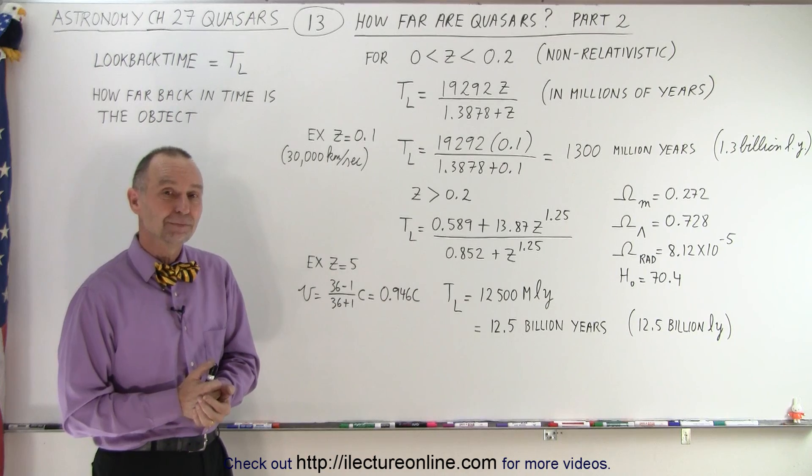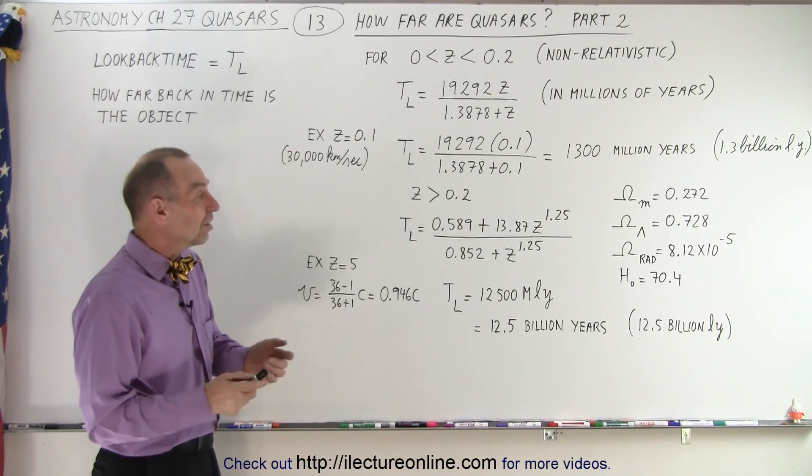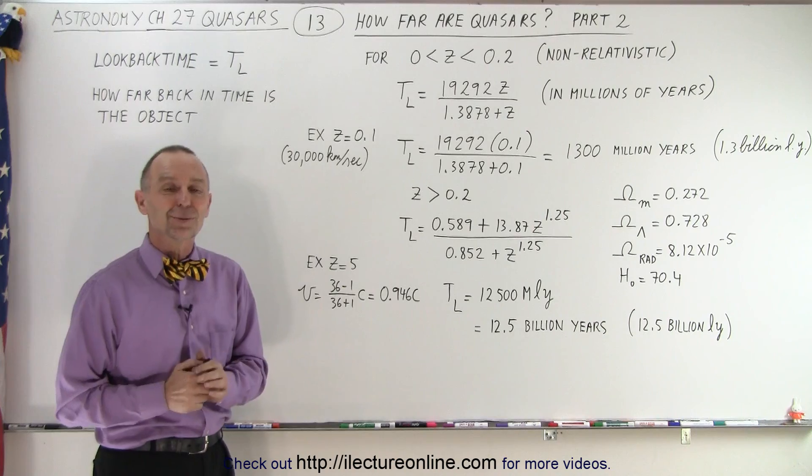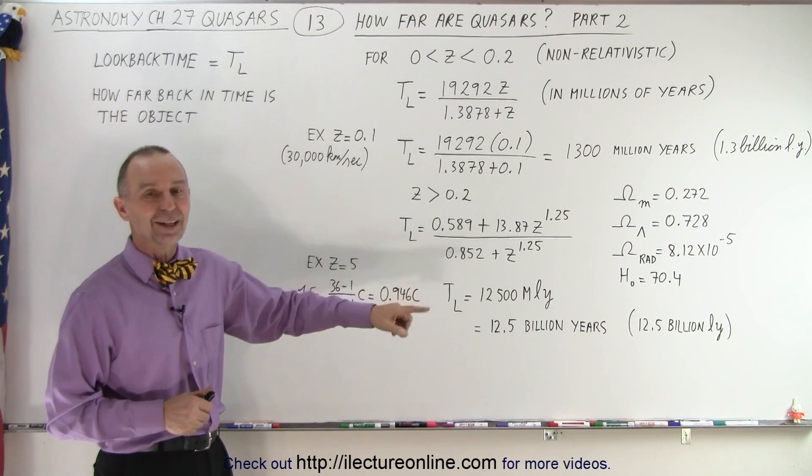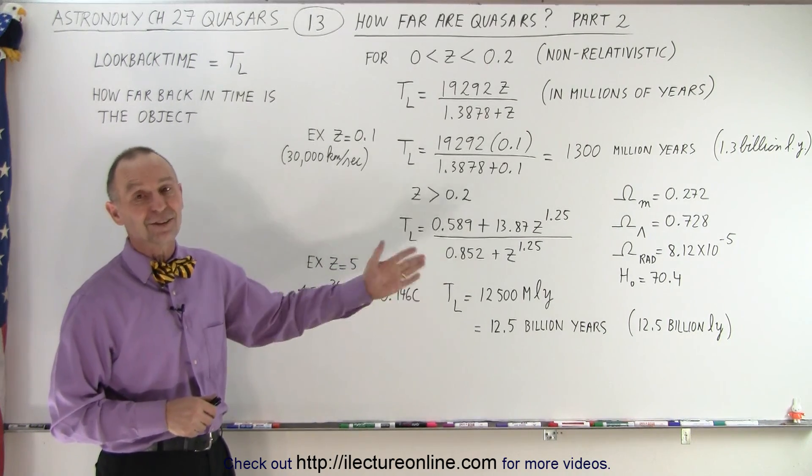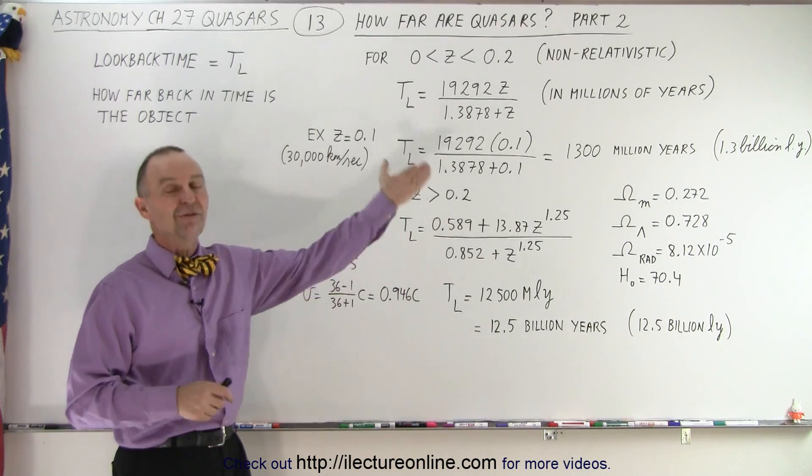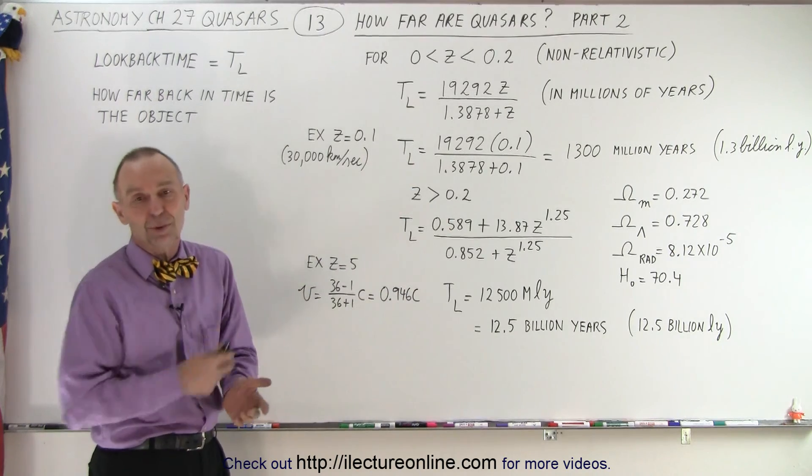I thought the Hubble constant was 73 something. Oh, yes, it is. Well, no, it depends who you talk to, right? We have different ways in which it's calculated. We have values anywhere from 69 to 73. This is just a value we plugged in there just to come up with these constants.